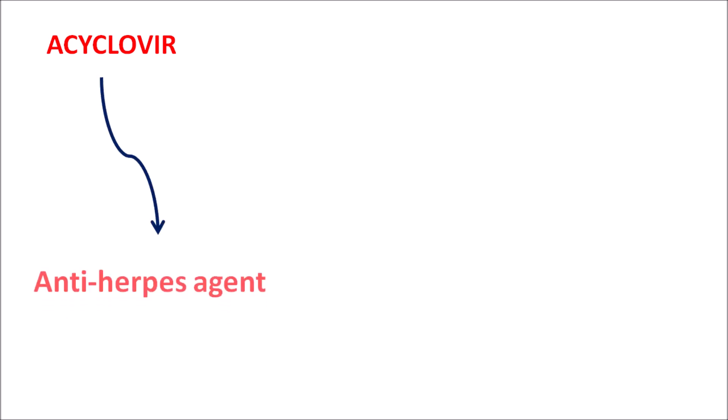Today let us discuss acyclovir. This is one of the antiviral agents classified as an anti-herpes agent. This drug can be easily identified with the suffix '-cyclovir'. We have a few drugs with a similar suffix such as ganciclovir and famciclovir — all of these are antiviral agents acting against herpes infections.